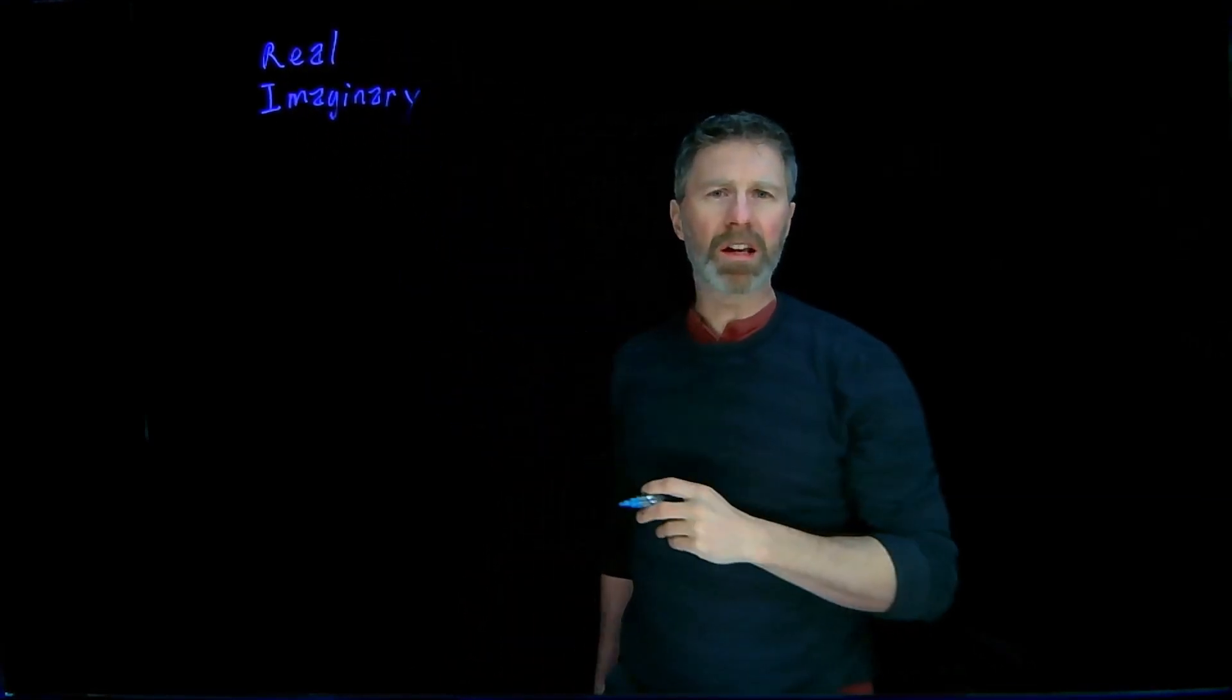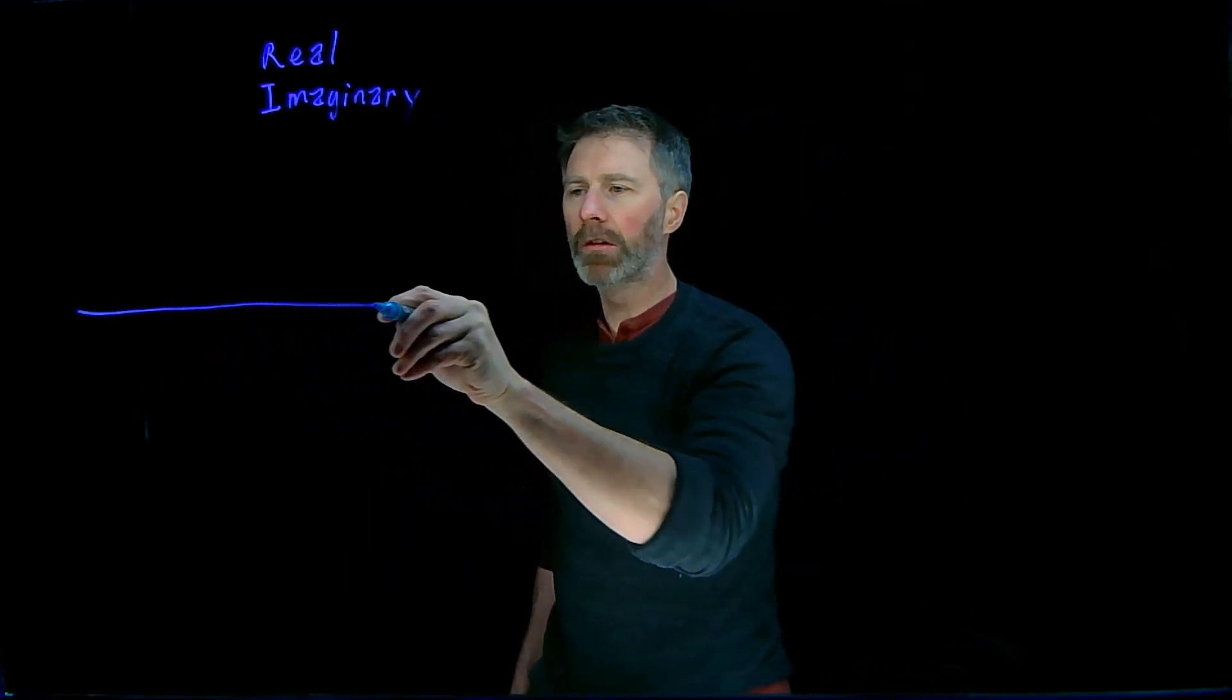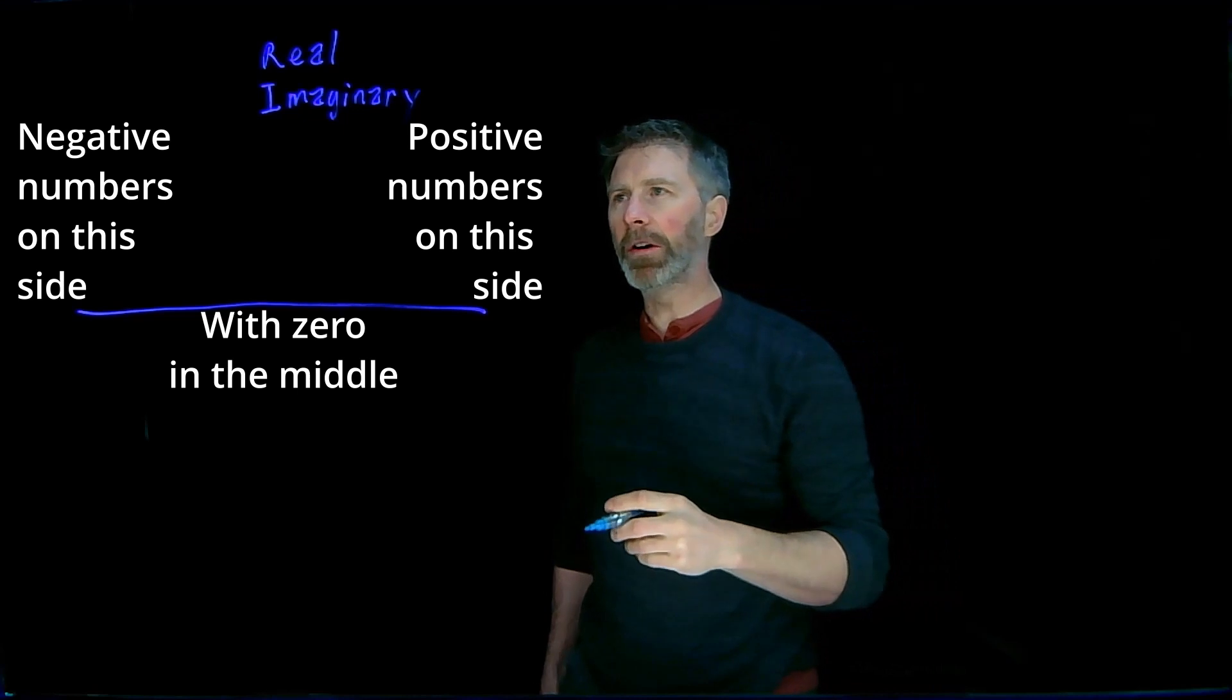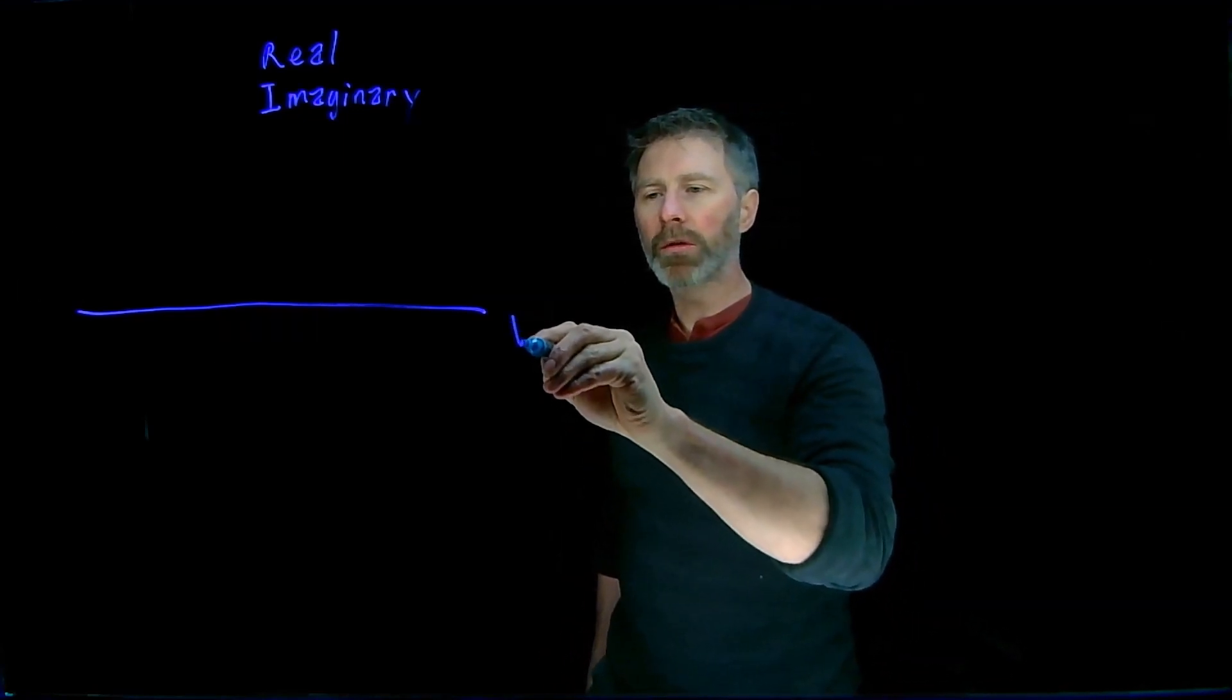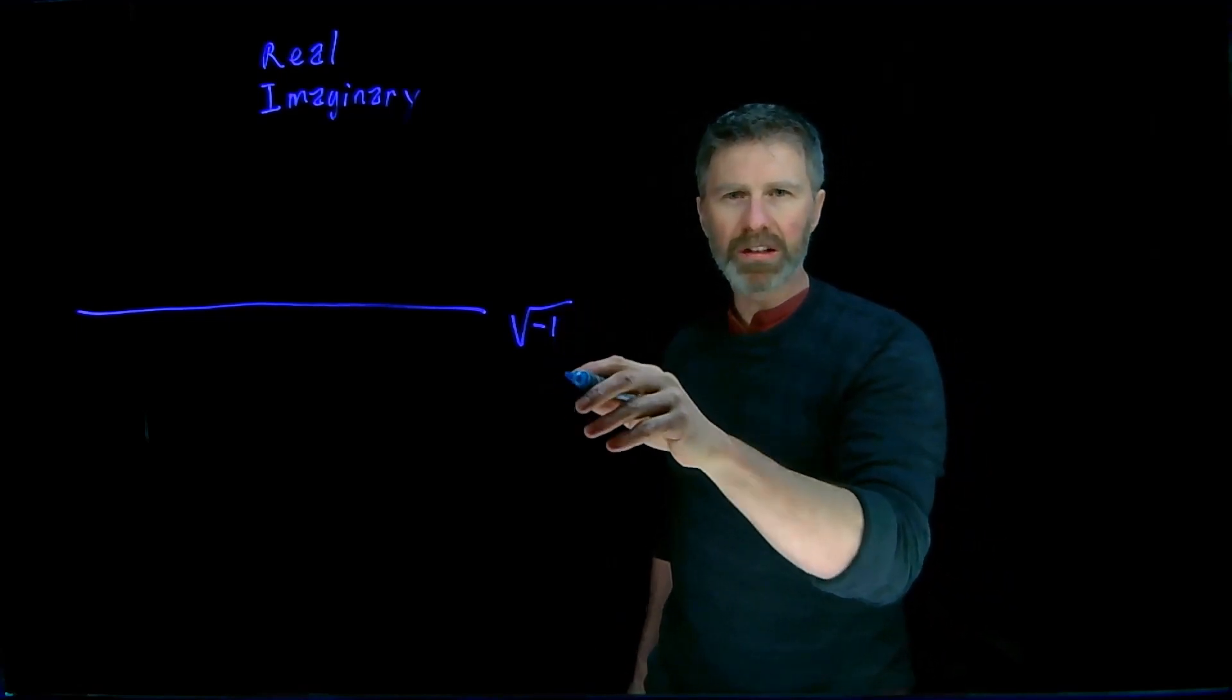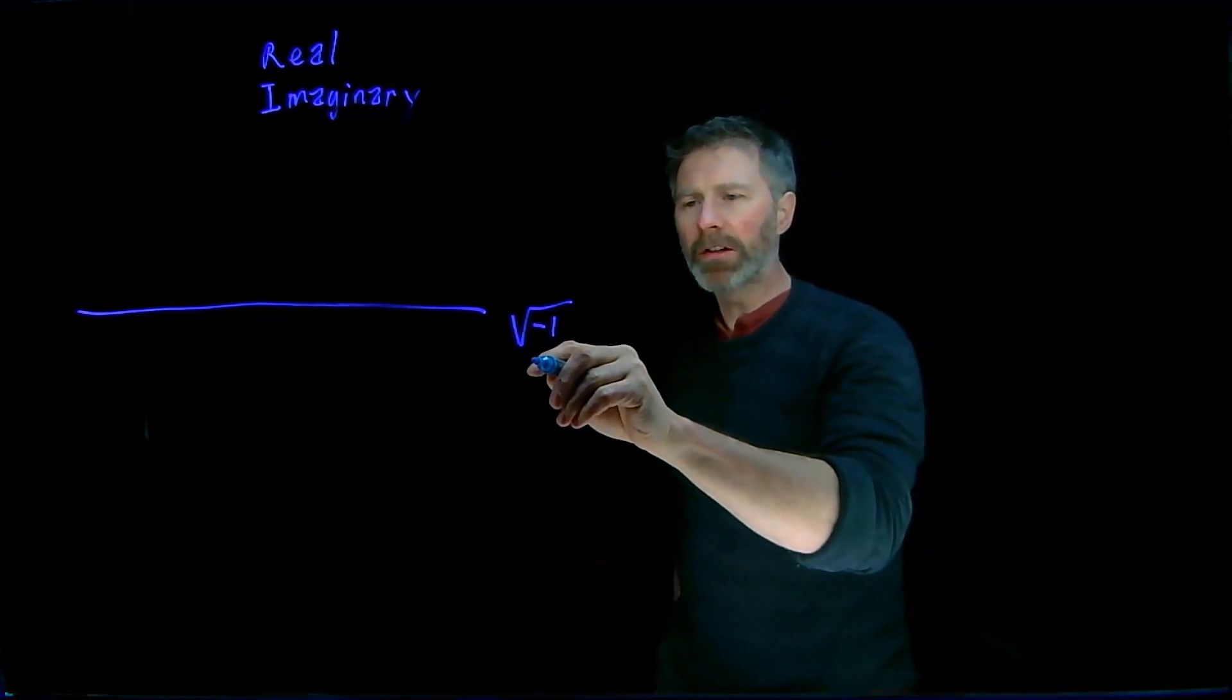And this real part is just a real number which can be represented by a horizontal line. And the imaginary part is a real number multiplied by the square root of negative one. And that square root of negative one is just used to denote that an imaginary number.